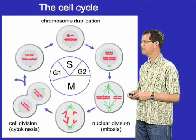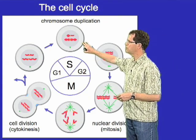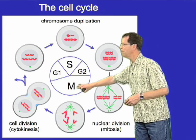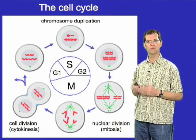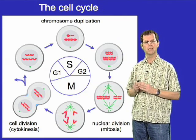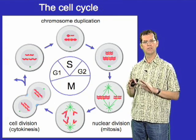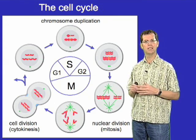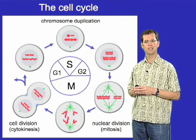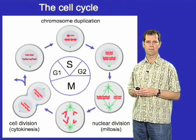S phase is the period during which the chromosomes duplicate, and M phase is the period during which those duplicated chromosomes — or sister chromatids as they're called — are segregated to opposite poles of the cell and then packaged into individual genetically identical daughter cells.